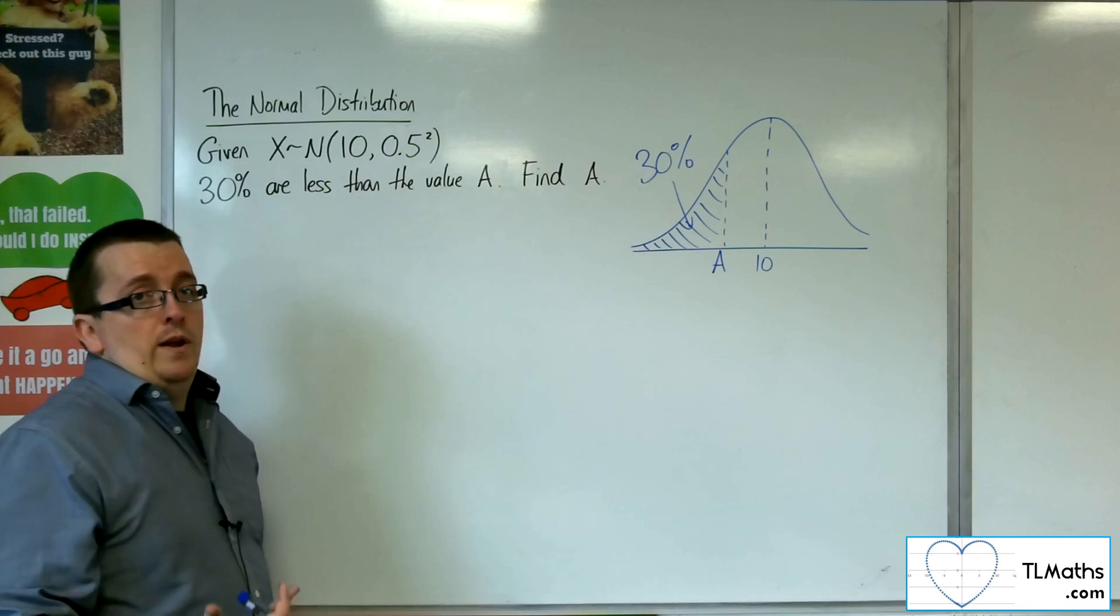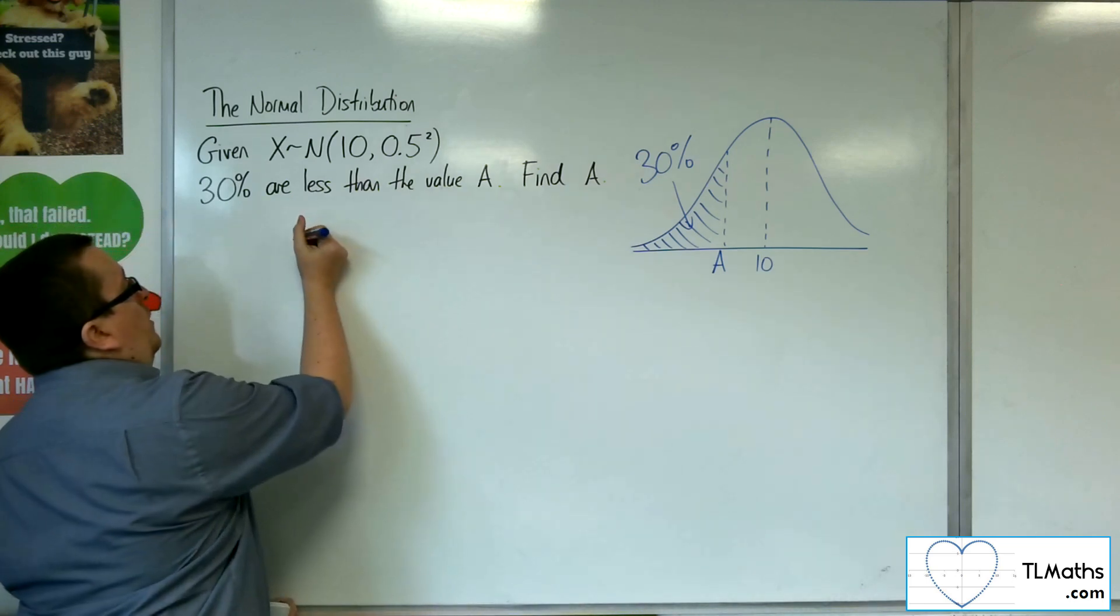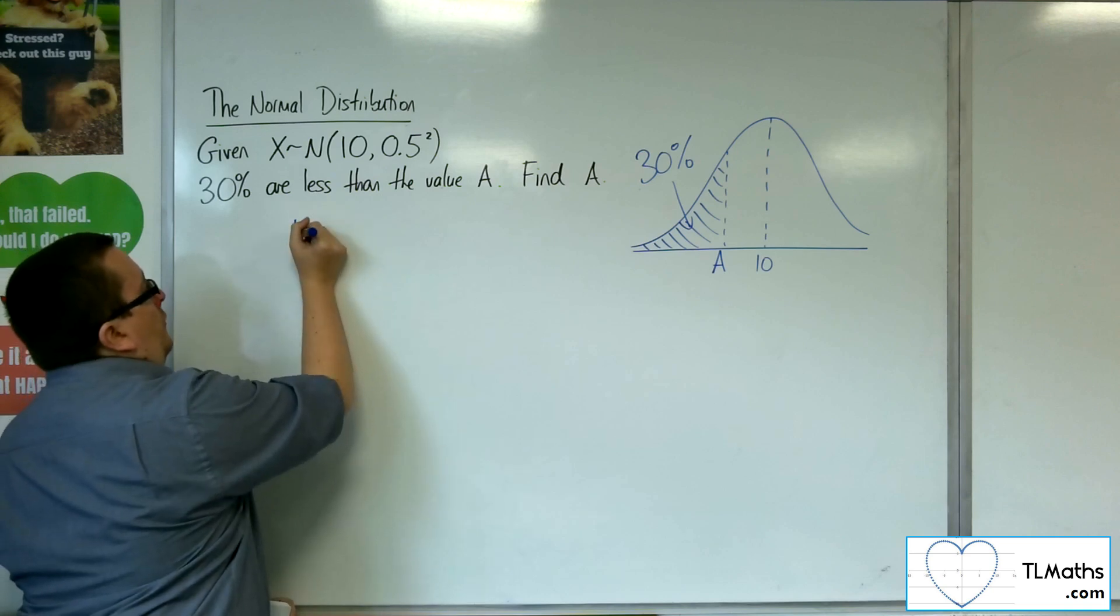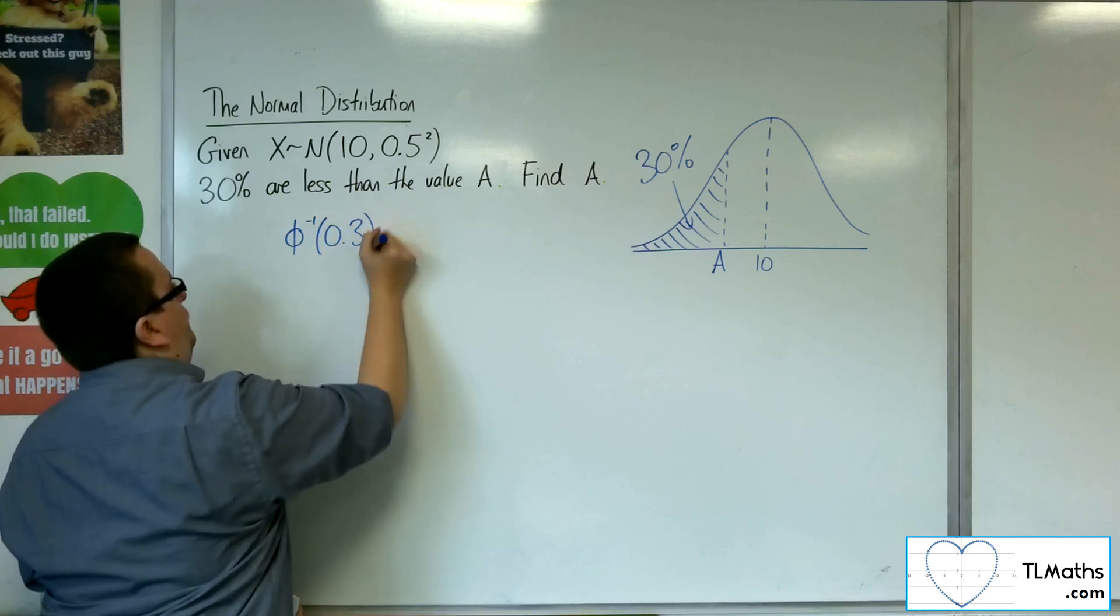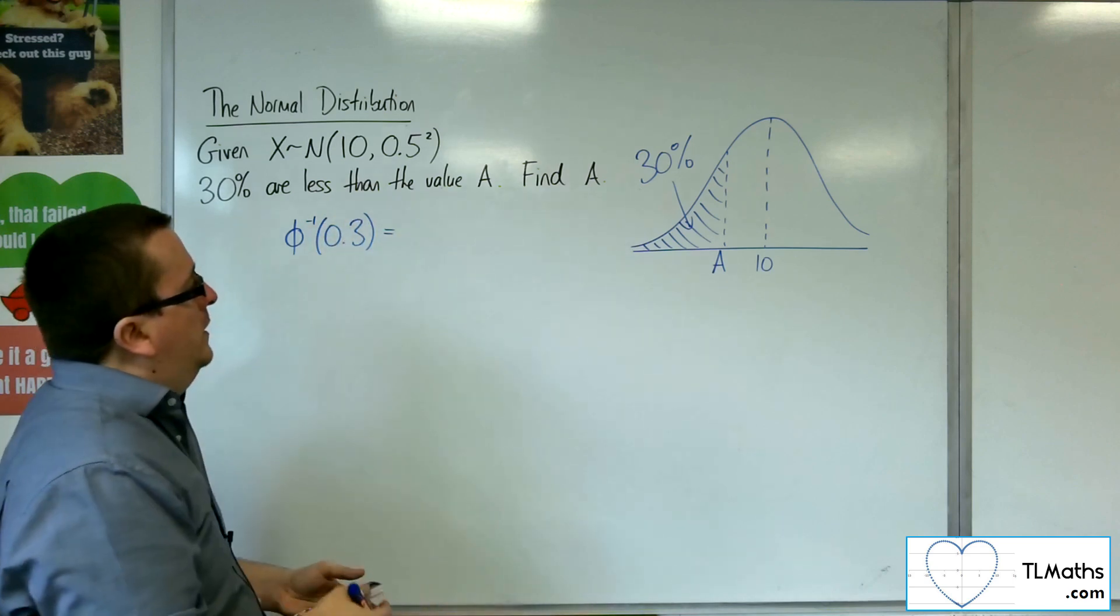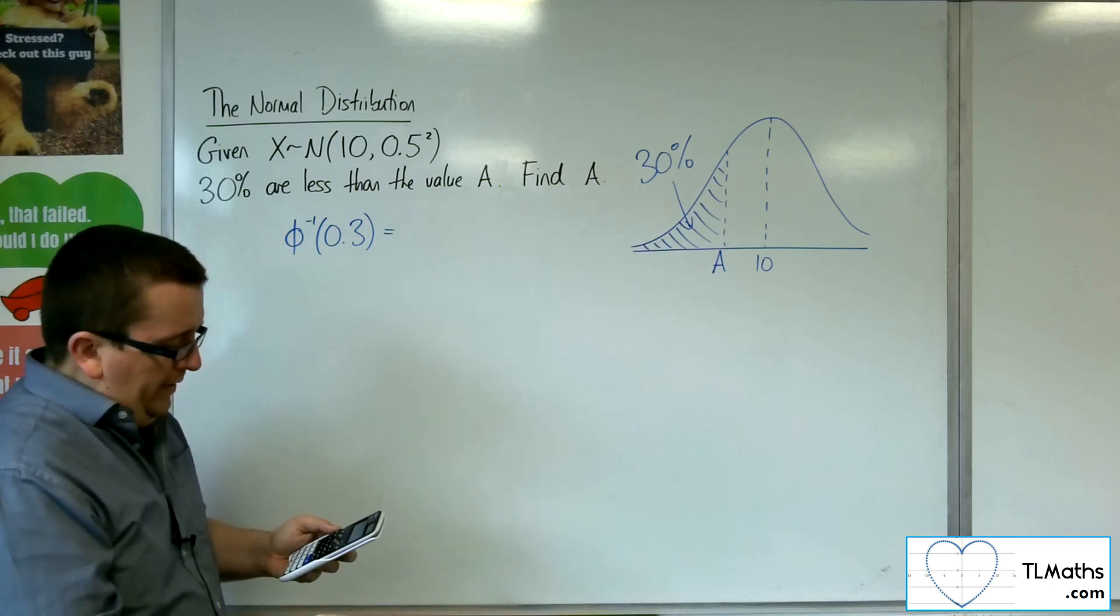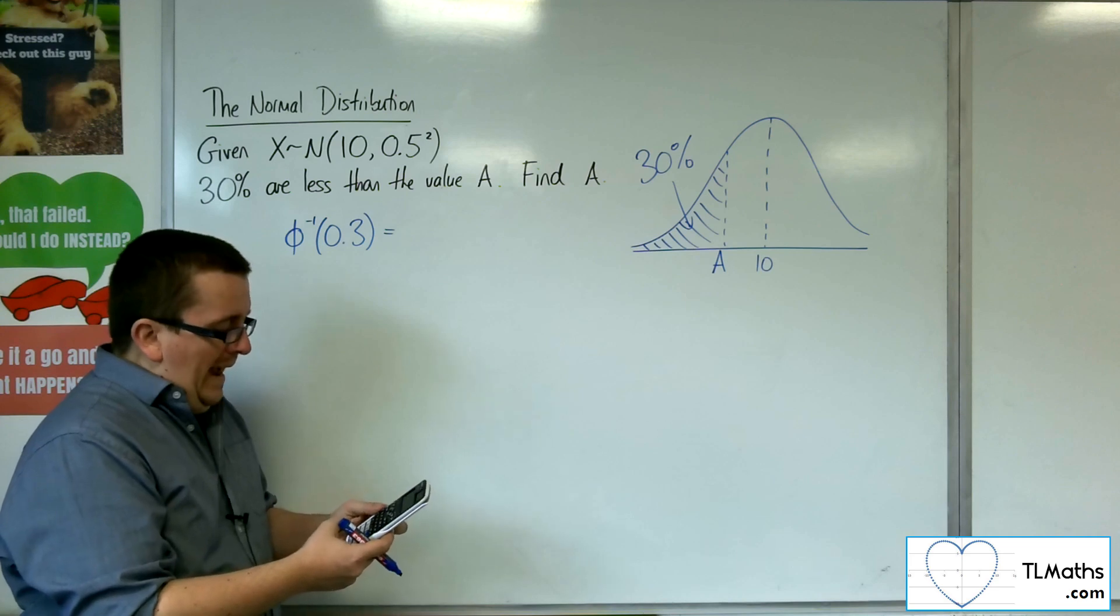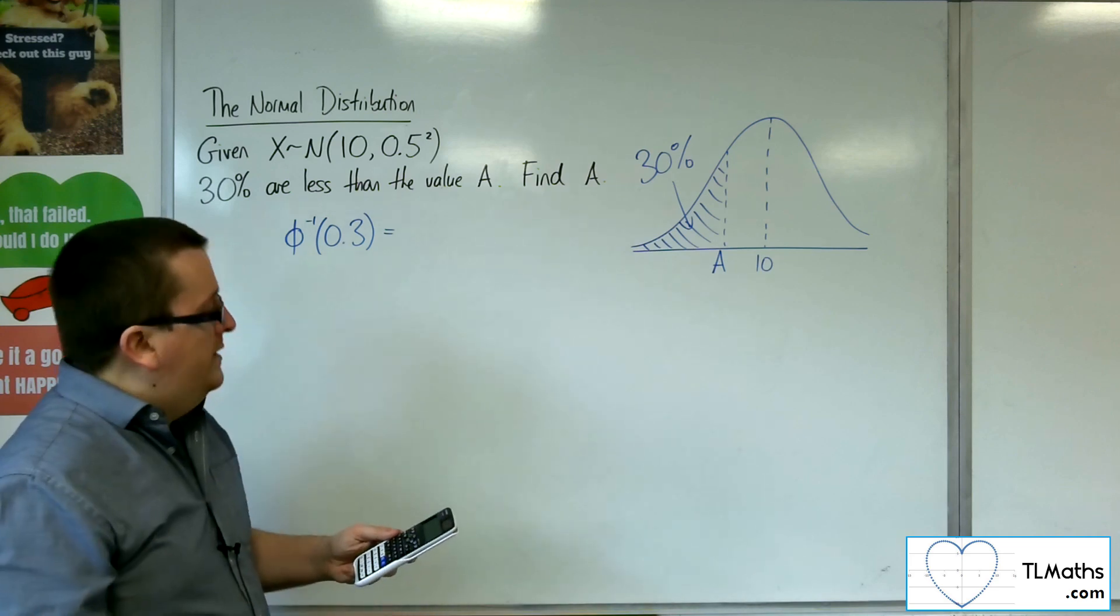So the way that we do it is we use the inverse norm of 0.3. So this is often written as the inverse phi of 0.3. So how can we work that out? Now, on our calculator, you want to go to menu, then number 7, and then you want to go to number 3, inverse normal.